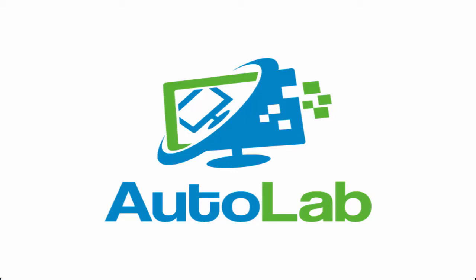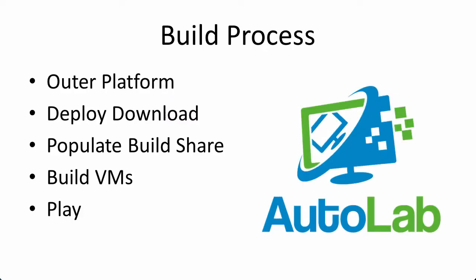Hello and welcome to this Autolab video. I'm Alistair Cooke and we're going to look at populating the build share on your Autolab environment. The build process is reasonably simple: we first prepare the outer platform, then deploy the downloaded copy of Autolab for our outer platform, populate the build share, and then start building the virtual machines. The whole point is to very quickly get to the point where we can play with vSphere.